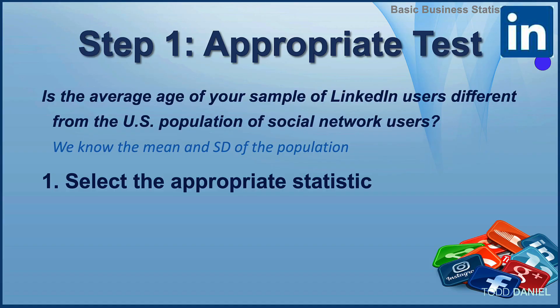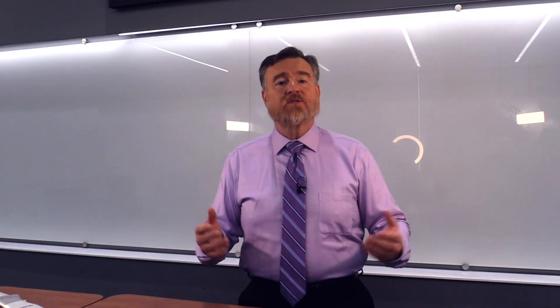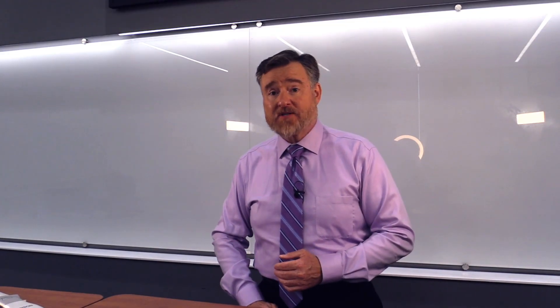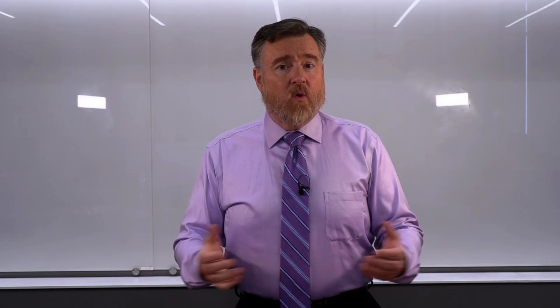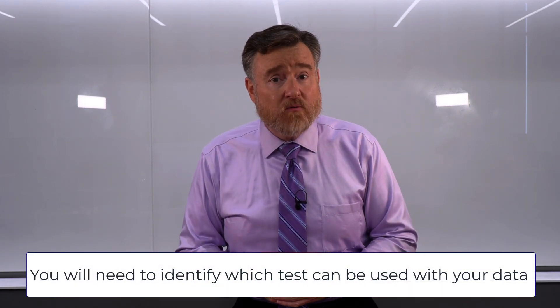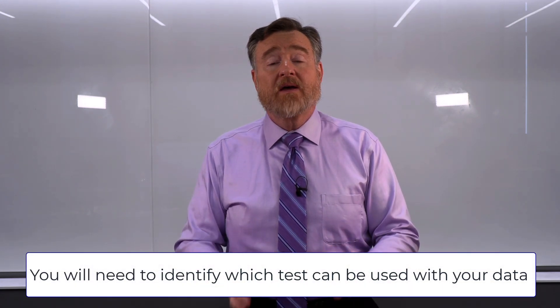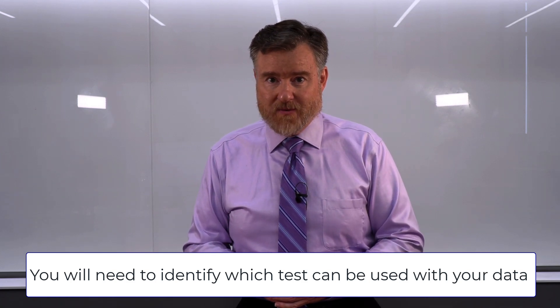Now we can begin working through the five steps of hypothesis testing. Step one is to select the appropriate statistic. Based on the fact that we know both the mean and the standard deviation of the population, we are going to use the one-sample z-test. In the future, you will need to recognize the research setup that would allow you to use this test.